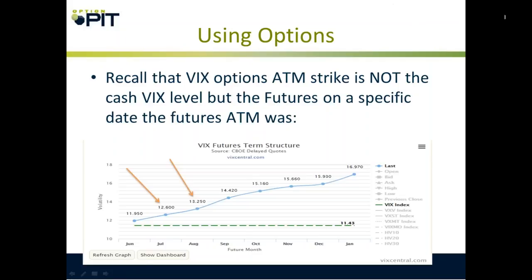Recall that the at-the-money strike in VIX options is not the cash VIX value — the at-the-money is the future. So in July, the at-the-money option was the 12.5s, and in August the at-the-money would have been the 13s or 13.5s.